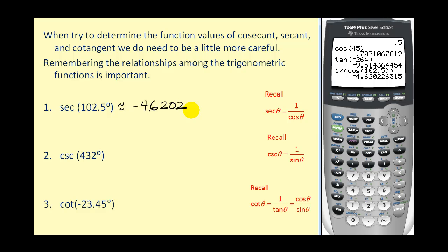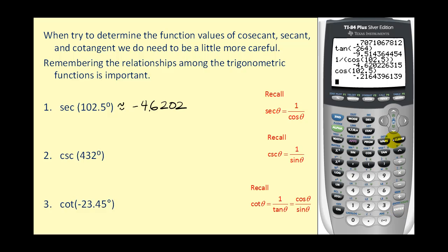Now we could have obtained the same value by finding the cosine of 102.5 degrees and then taking the reciprocal. If I found the cosine of 102.5, press enter, if I want to find the reciprocal of this, I can simply press the x to the negative one power and it will convert this to negative 4.6202 as we had above.